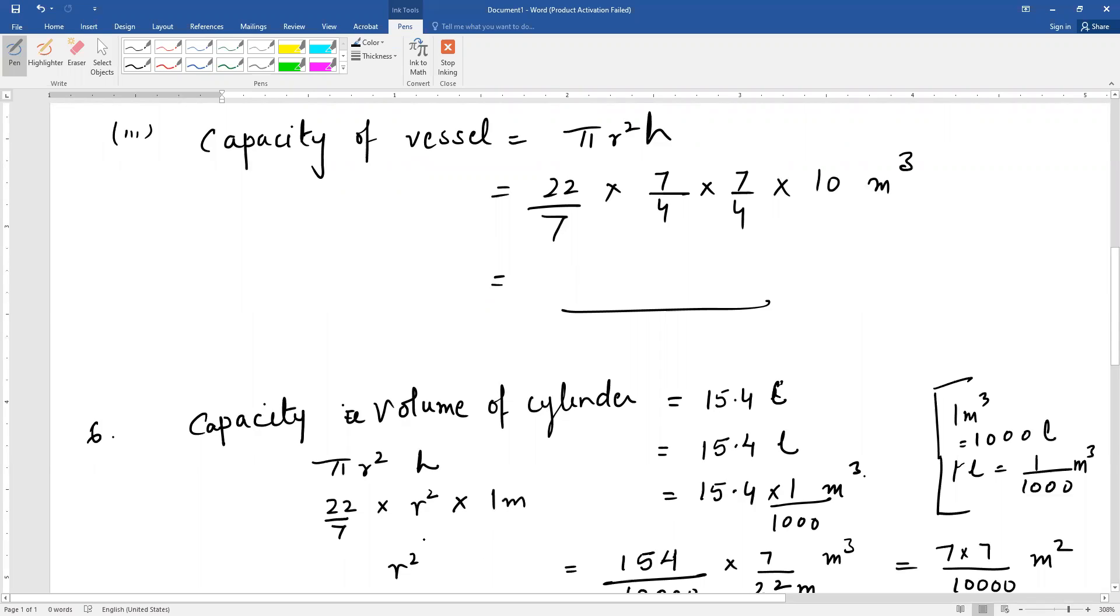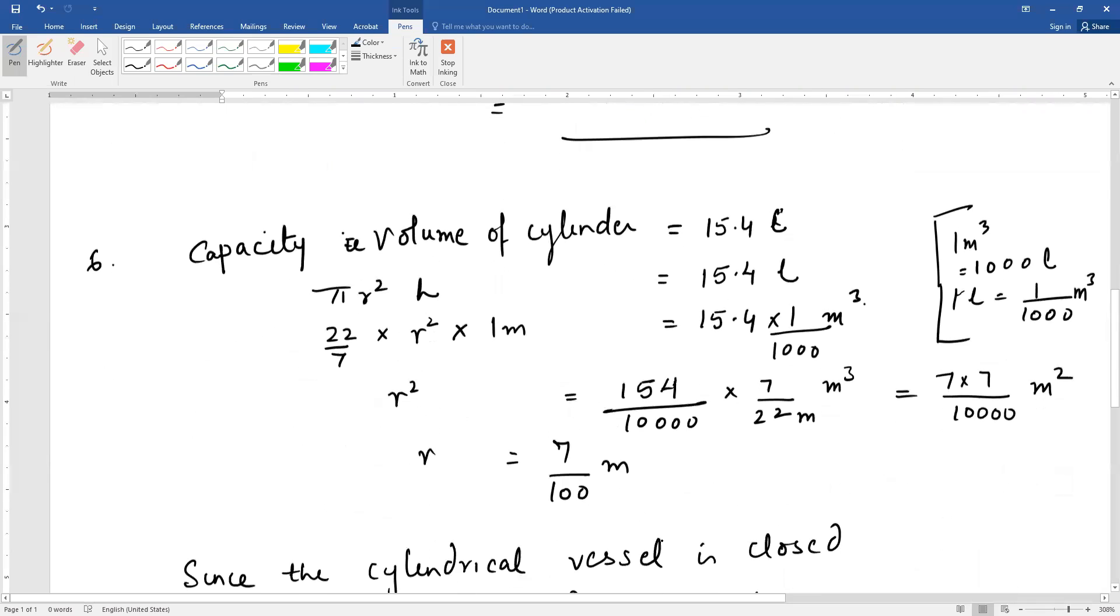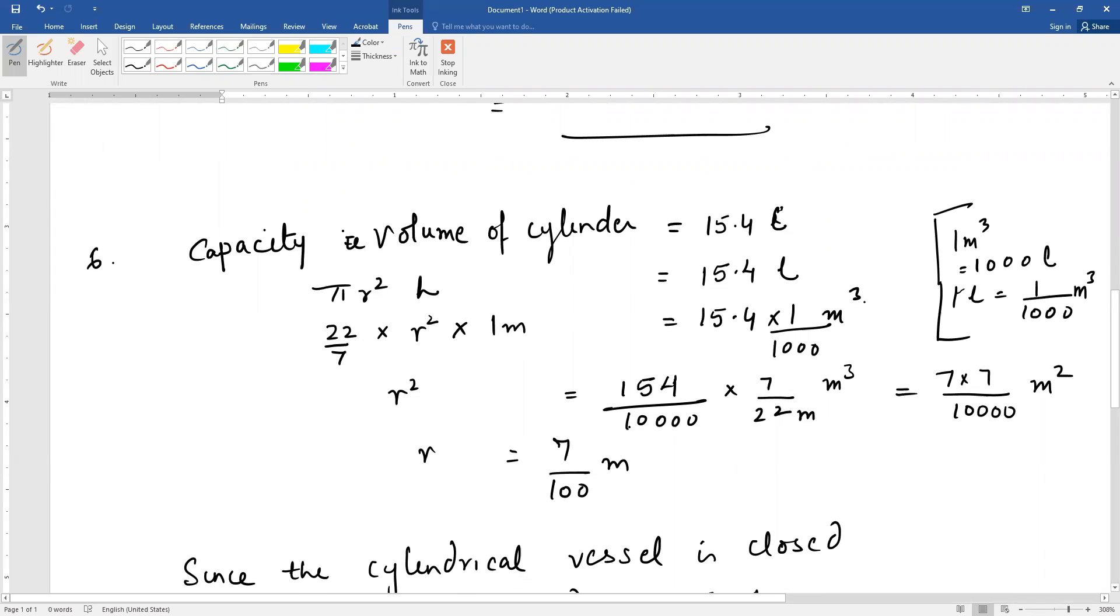Now r² equals 15.4 × 1/1000 divided by π × 1. Removing the decimal: 154/10000 × 7/22 meter square. This simplifies to 7/100 meters as the radius, or 0.07 meters.